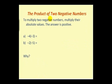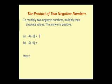Next, the product of two negative numbers. To multiply two negative numbers, we multiply their absolute values and the answer is positive. This rule is correct, but it doesn't really justify why a negative times a negative is positive. For example, negative 4 times negative 3 equals positive 12, and negative 2 times negative 5 equals positive 10.